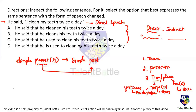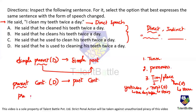Similarly, present continuous becomes past continuous; present perfect becomes past perfect; and present perfect continuous becomes past perfect continuous. Just replace the word 'present' with 'past.' The direct sentence is: 'He said, I clean my teeth twice a day.' The tense is simple present, so most would say it should change to simple past — 'he cleaned his teeth twice a day' — but that is actually wrong.